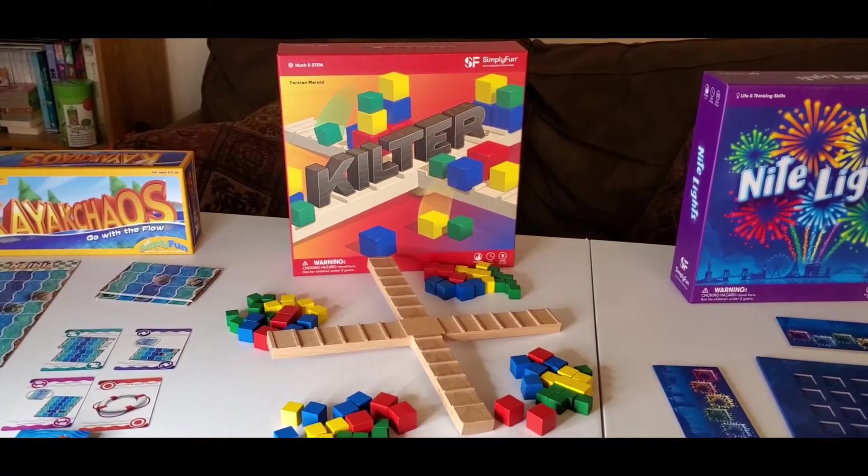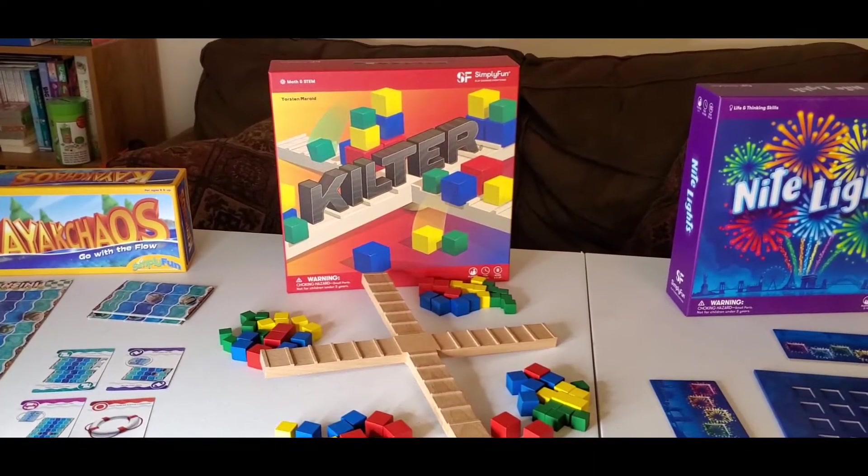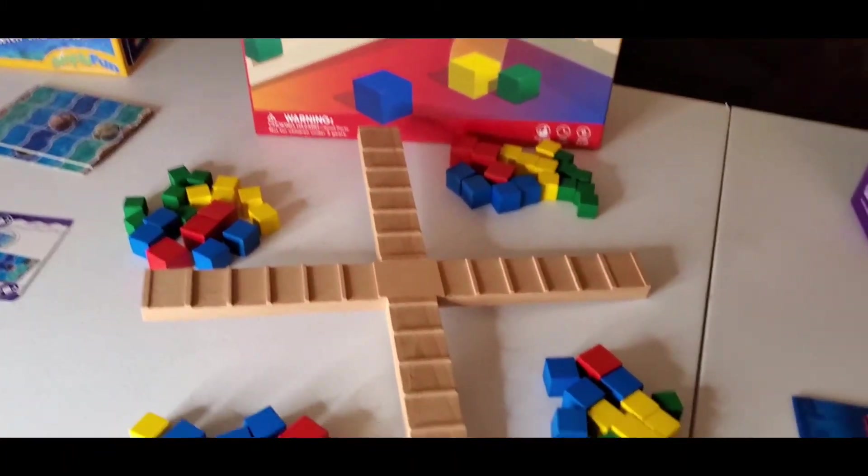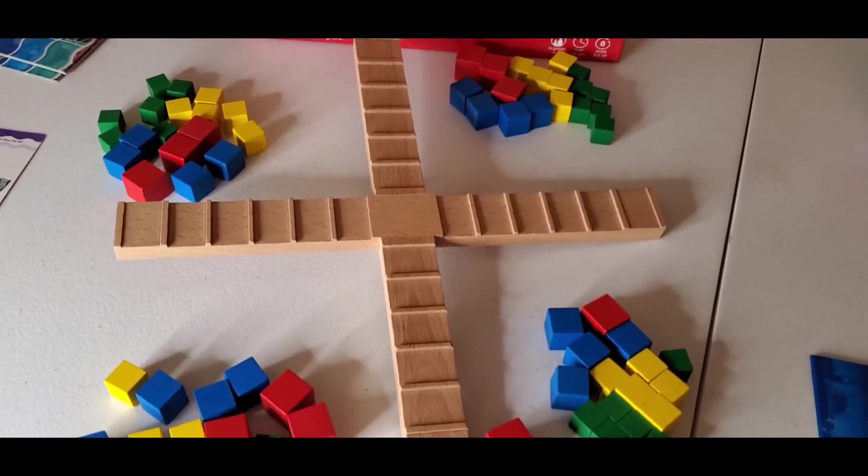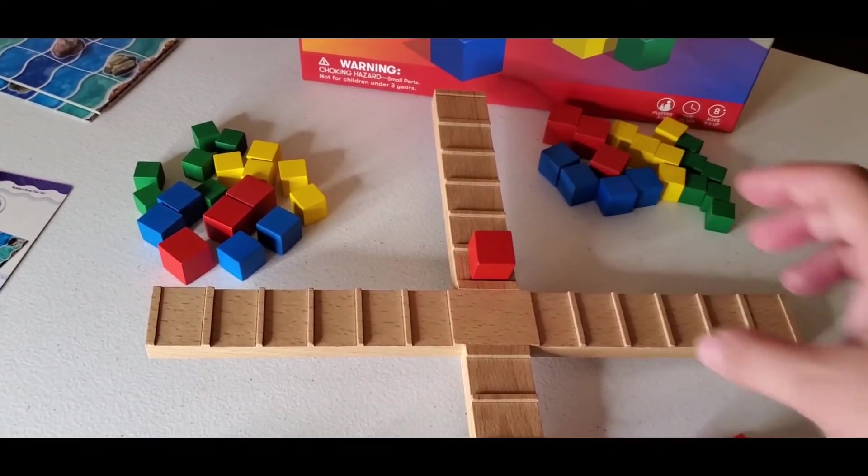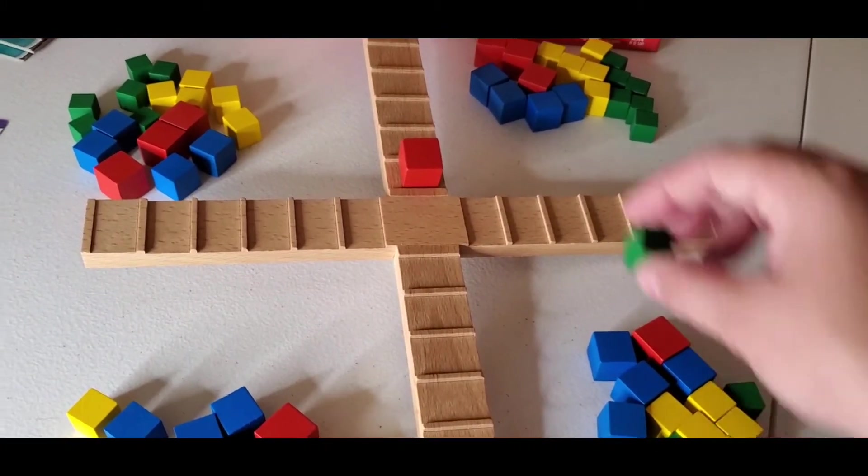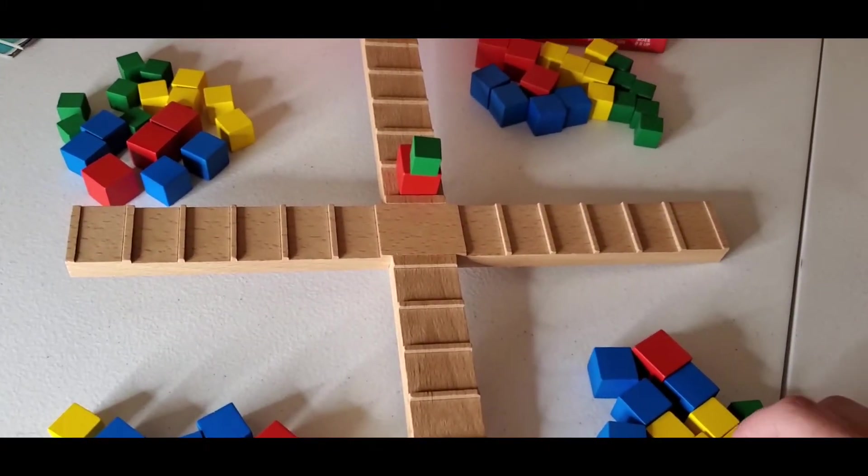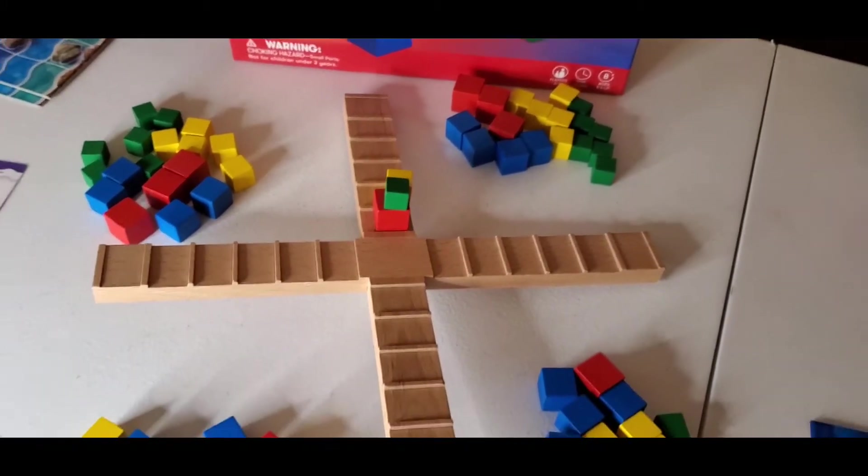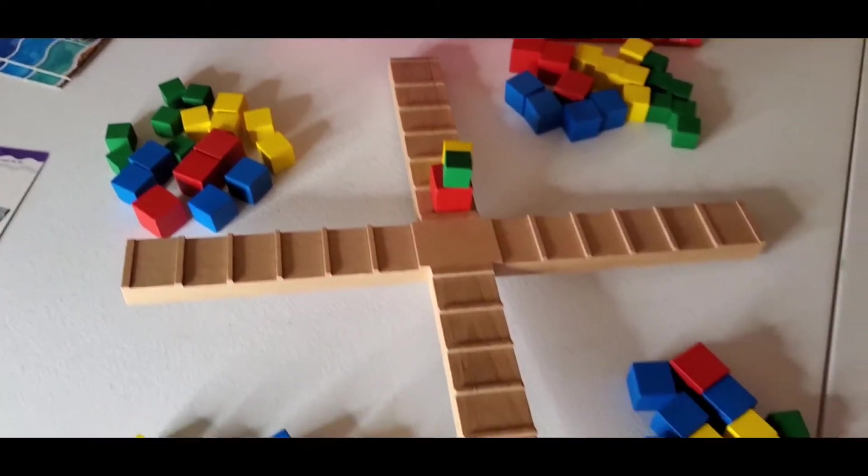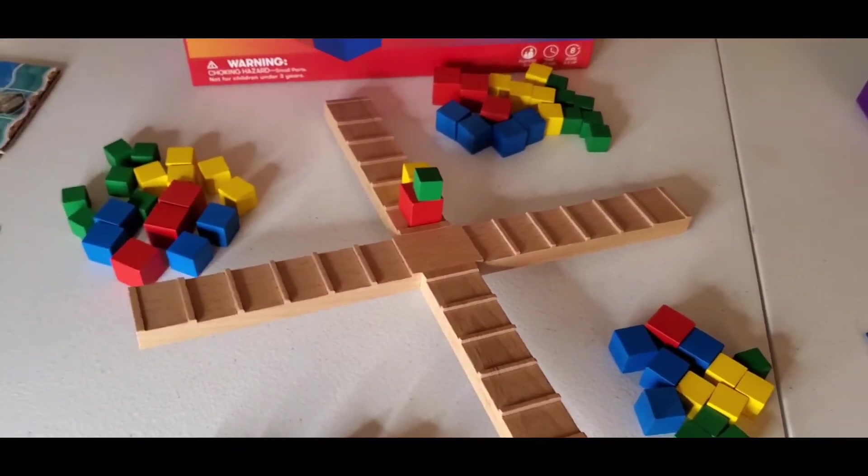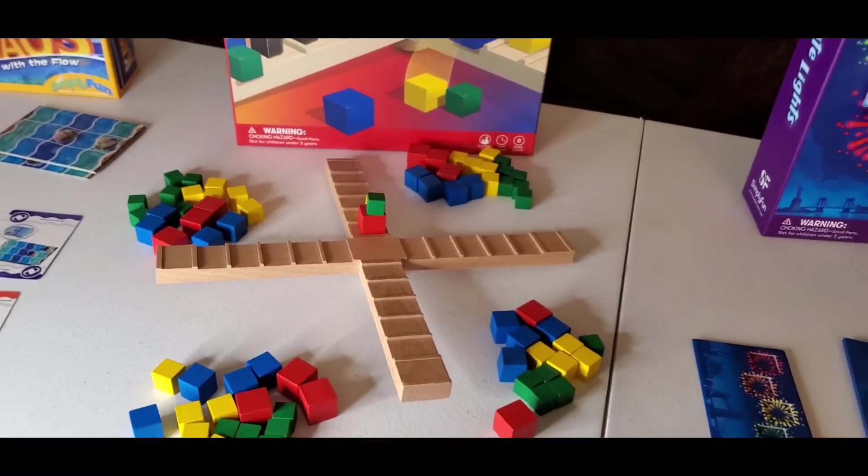Kilter is one of our best sellers and is for ages eight and above, two to four players, and focuses on physics and fine motor skills. In this game, you are placing your blocks on one of the upraised arms on the seesaw. If you place it and it doesn't go down, then you can continue to play until the arm of the seesaw goes down. If it goes down, your turn is over and any blocks that fall off get added back to your pile. Then play continues and the first person to get rid of all of their blocks wins.